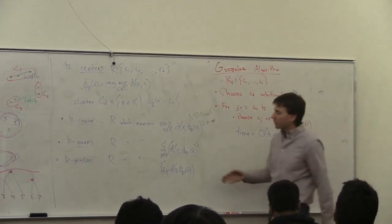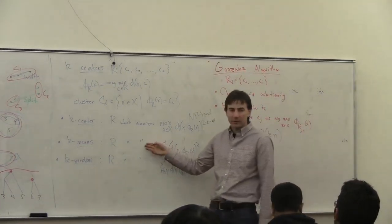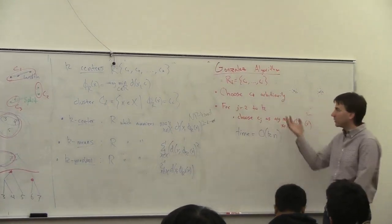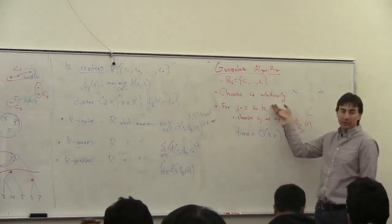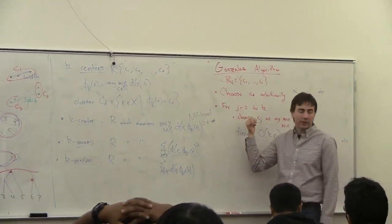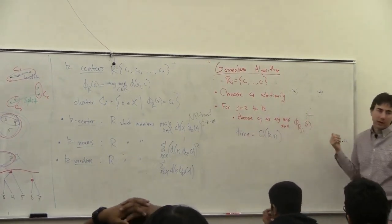Okay, so on Wednesday we'll talk about Lloyd's algorithm for k-means clustering, and actually a newer variation for k-means which is modeled after Gonzales' algorithm but works for k-means instead of k-center. So it will be more stable to outliers as well.